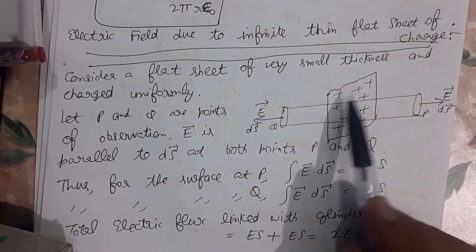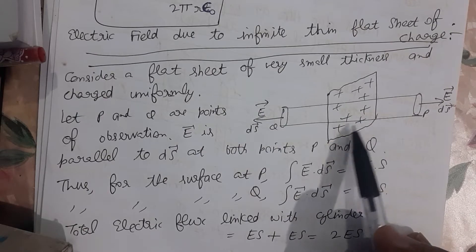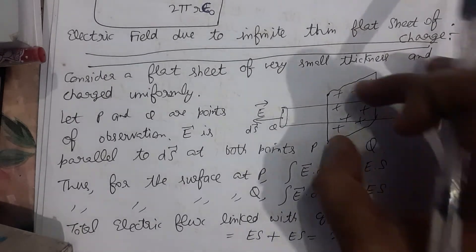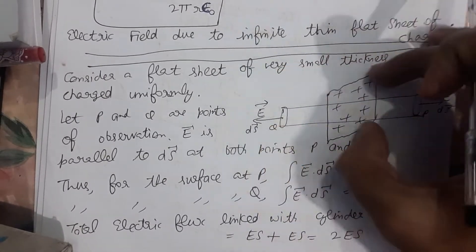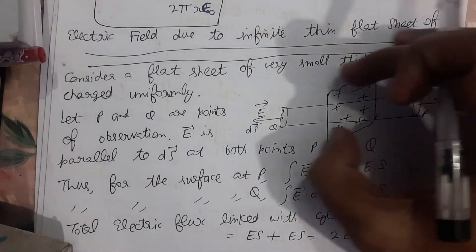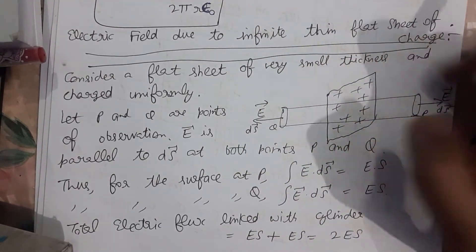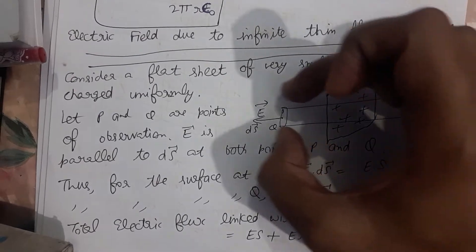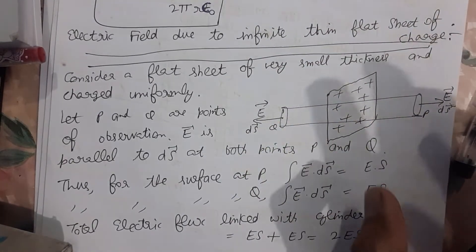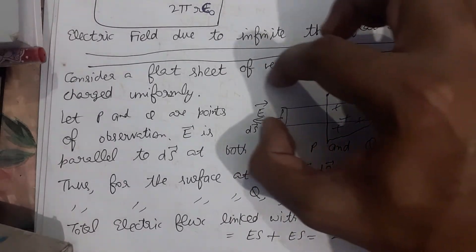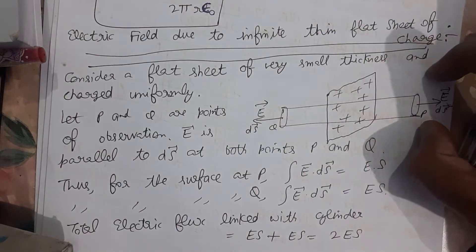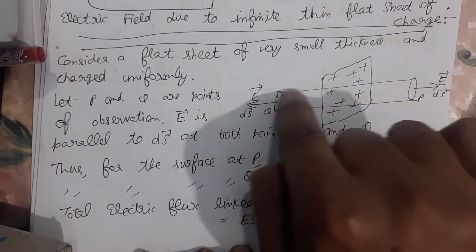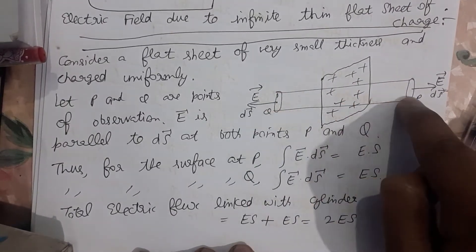The whole sheet contains positive charge. Then on both sides, left side and right side, we will draw a Gaussian surface. It will be in the shape of a rectangle. This is a rectangle, this is also a rectangle. So this is our Gaussian surface.